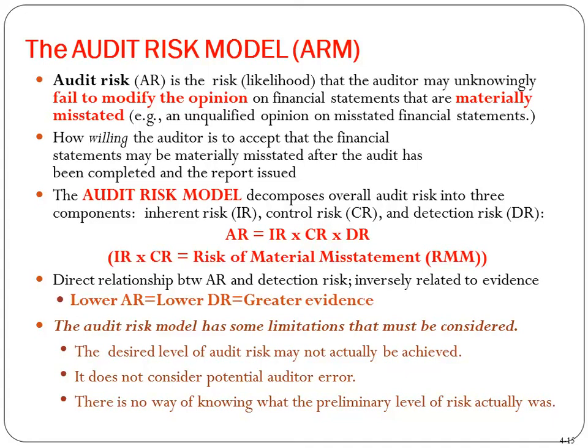There's a direct relationship between audit risk and detection risk, inversely related to evidence — the lower the AR, the lower the DR, and the greater the evidence required. Some limitations of the model: you can't always achieve the actual level of desired audit risk; it doesn't consider potential auditor error; and there's no way of knowing what the preliminary level of audit risk truly was. If you decide AR is 3%, the IR, CR, and DR all fluctuate to meet that number.